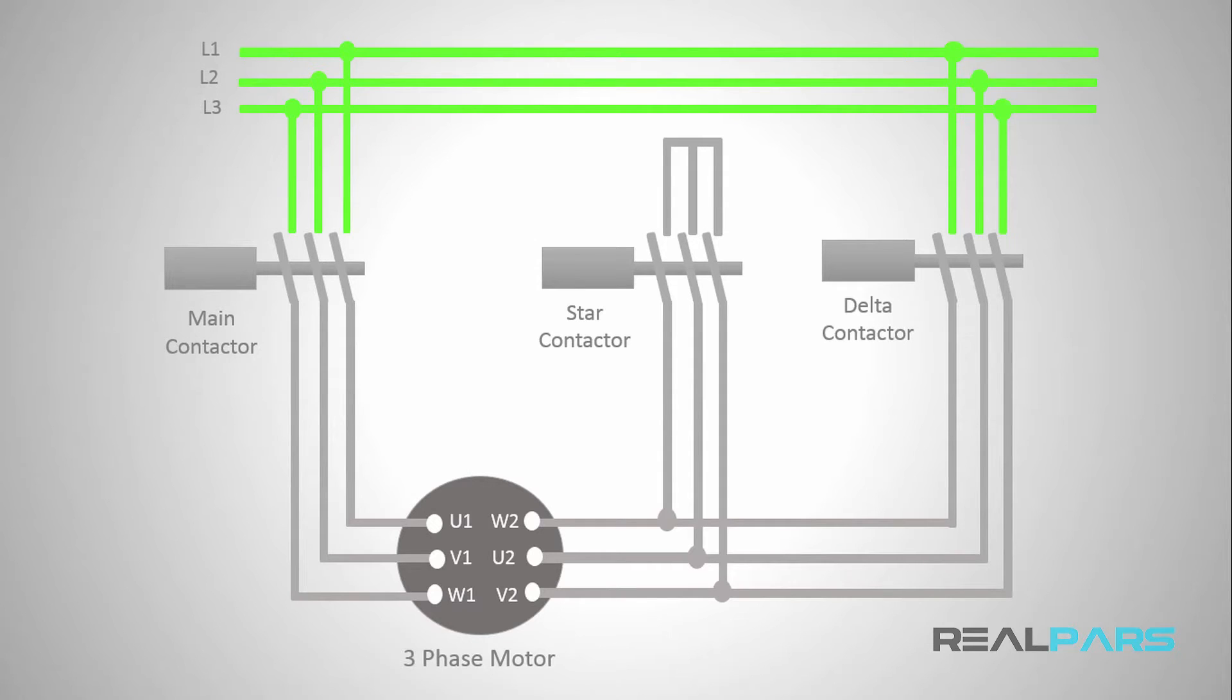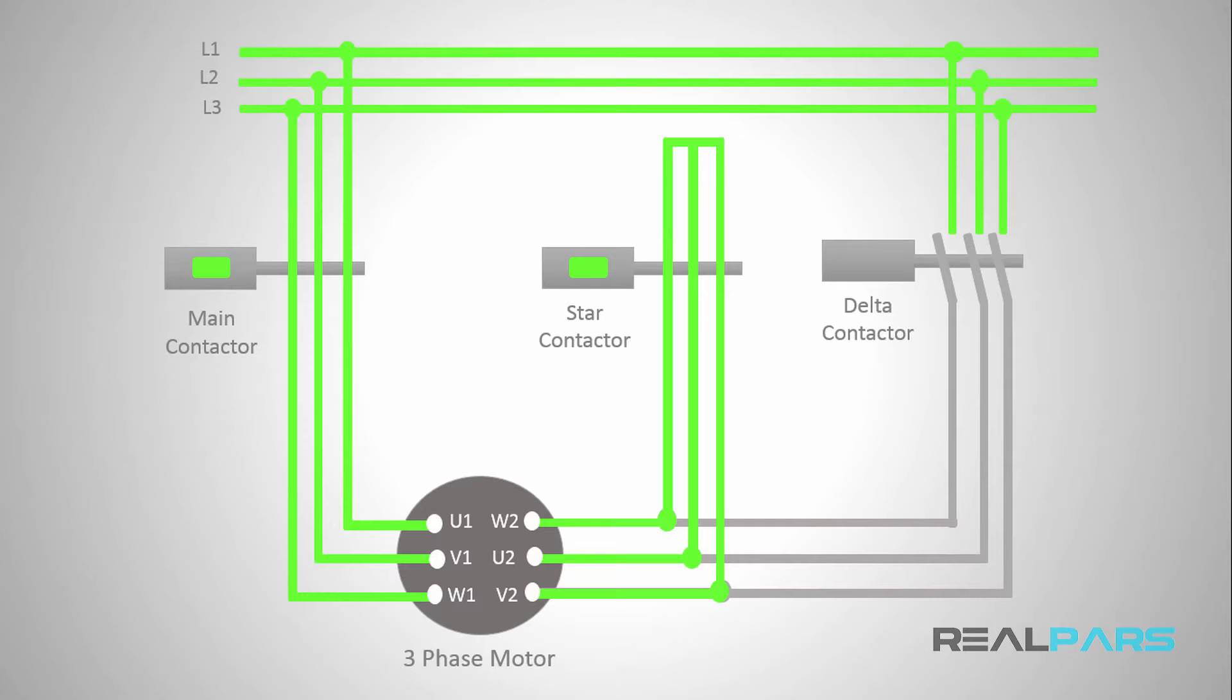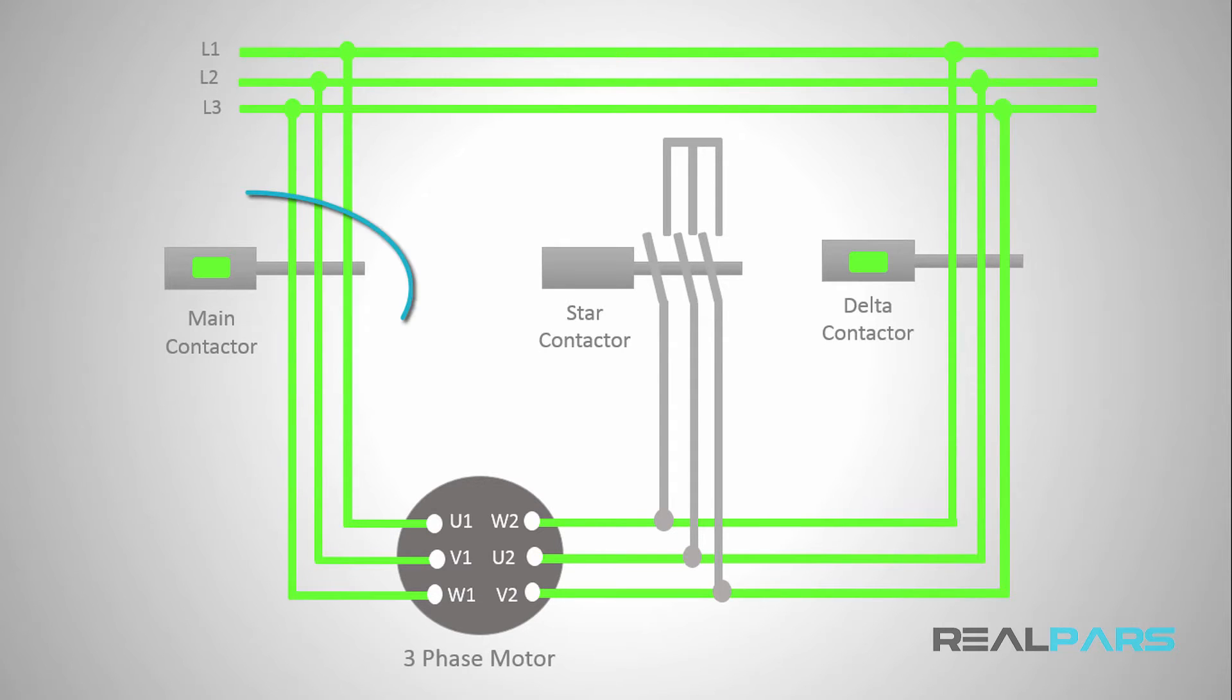To start the motor with the star-delta starter method I need to write a PLC program such that when the start switch is pressed both the main and star contactors will be energized. After a few seconds the star contactor will be de-energized automatically and the delta contactor will be energized all while leaving the main contactor energized.